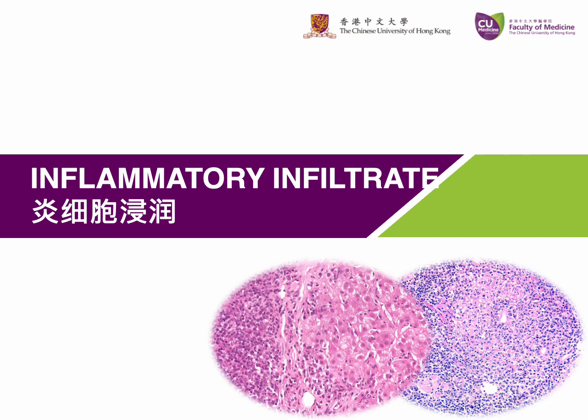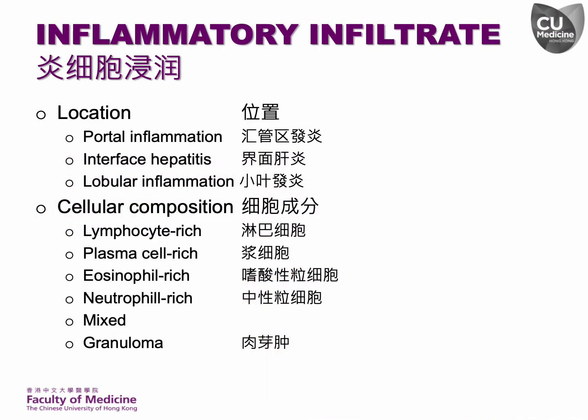Inflammatory infiltrate is the other component of necroinflammatory activity apart from cellular damage. To assess the inflammatory infiltrate in the liver, it is important to identify the predominant pattern based on its distribution — such as portal inflammation, interface hepatitis, or lobular inflammation — and the cellular components involved, including predominantly lymphocytes, plasma cells, eosinophils, neutrophils, or granulomas. Recognizing the main inflammatory pattern assists in refining the differential diagnosis.